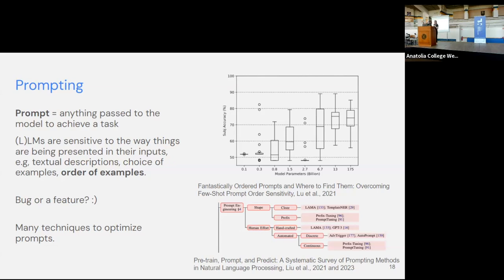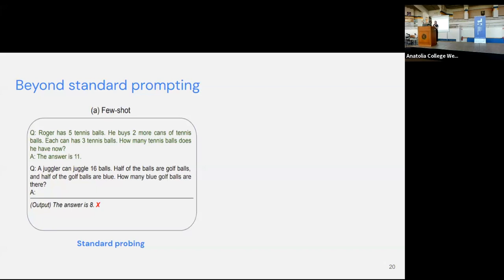One can argue that changing the order of inputs is actually a bug, but it also opened up a whole research space called prompt engineering — because it gives us a handle to interact with the model and modify our prompts in a way that we can harvest them to their full potential, extracting capabilities we weren't even aware of. If you're interested in this research area around prompting, here is a survey paper I'm linking which was also recently updated — worth checking out.